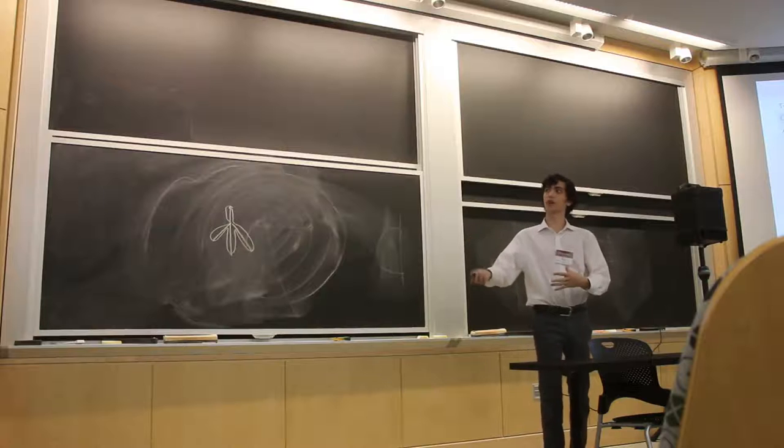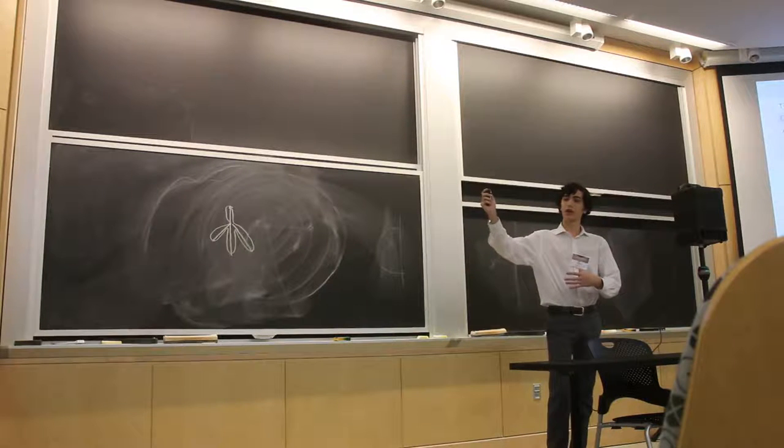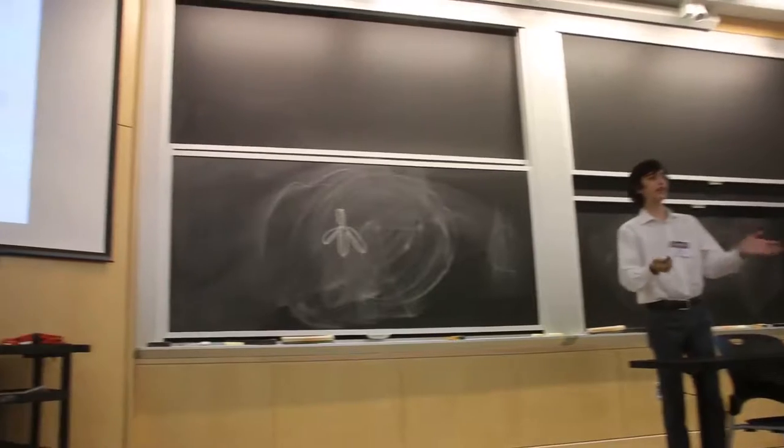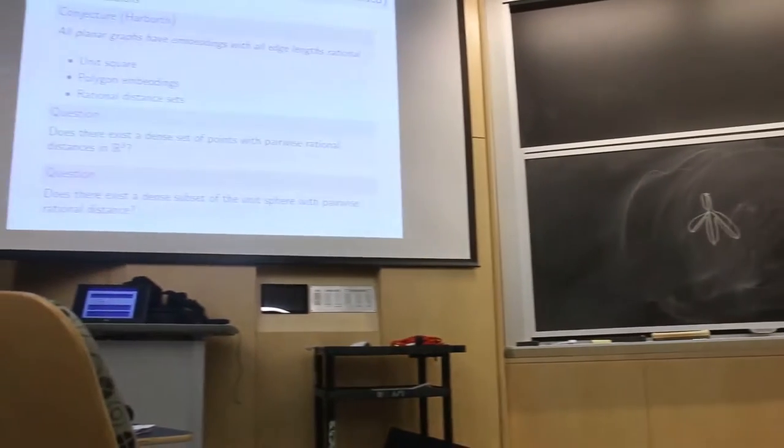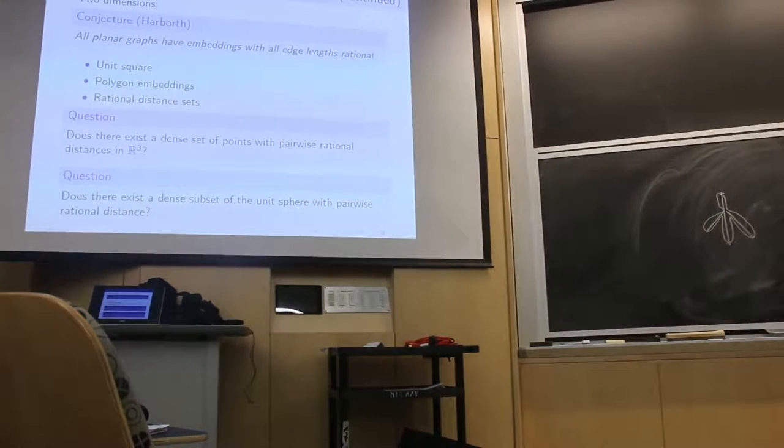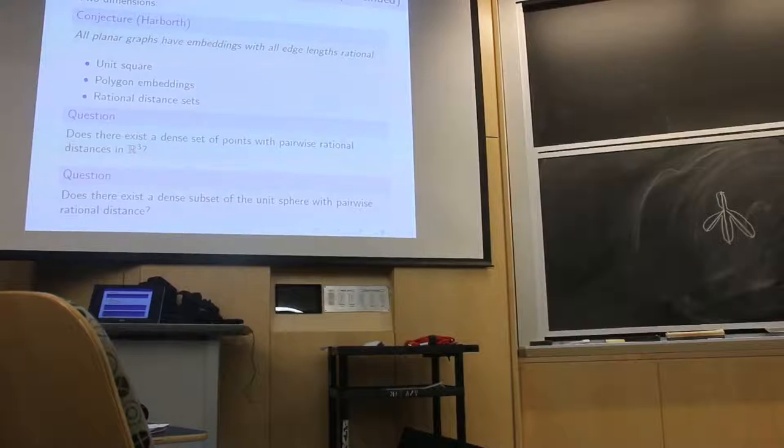And so that motivates the following problems in three dimensions, which are: does there exist a dense rational distance set in three dimensions? And does there exist a subset of a sphere, which is dense in the sphere, and is a rational distance set in three dimensions?